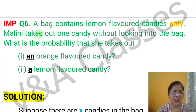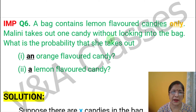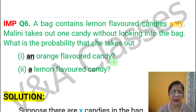Now question number 6. A bag contains 11 flavor candies only. Malini takes out one candy without looking into the bag. What is the probability that she takes out — first part of the question — an orange flavor candy? Second part of the question: a lemon flavor candy?